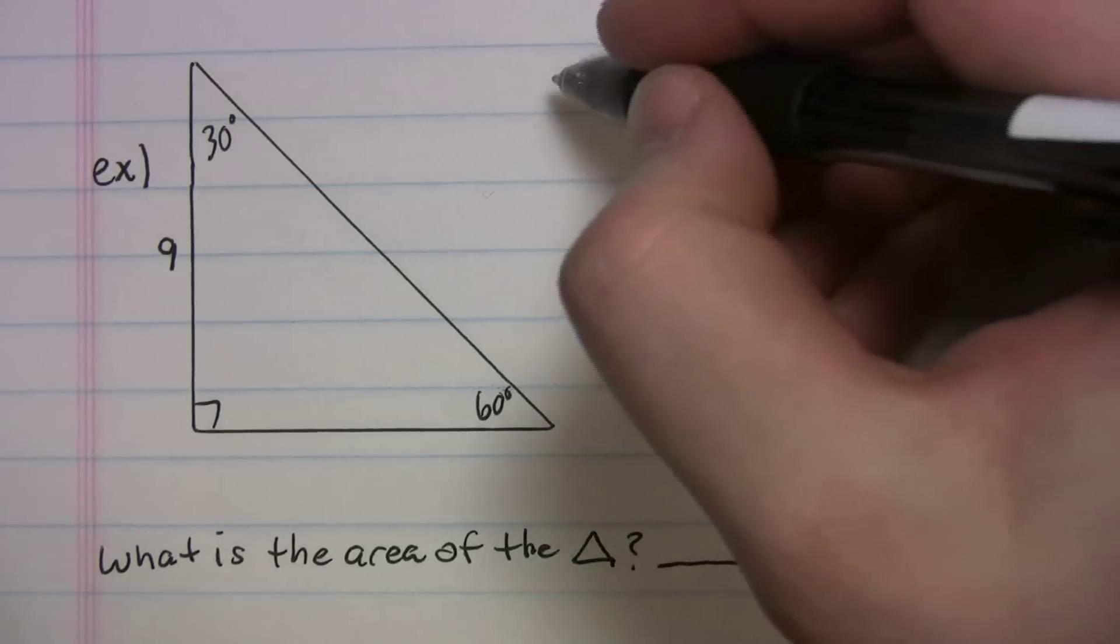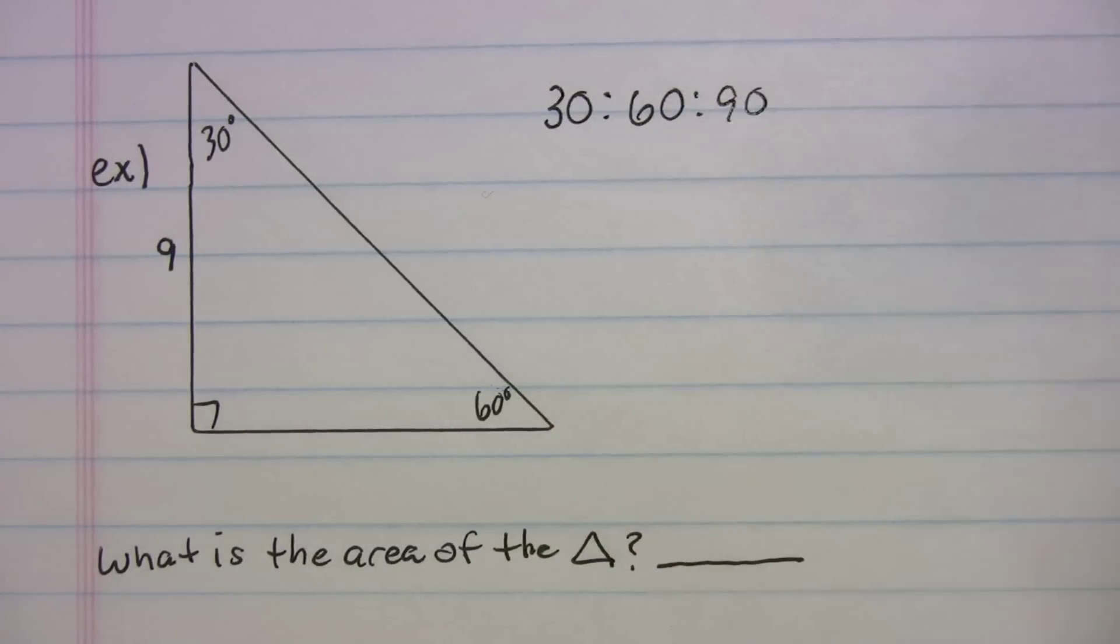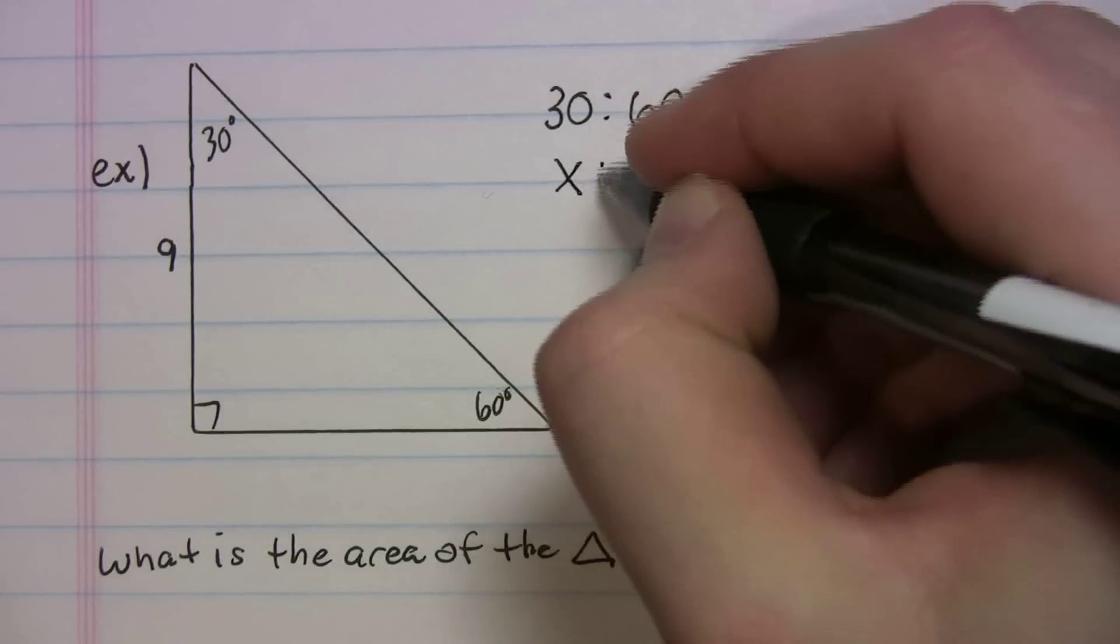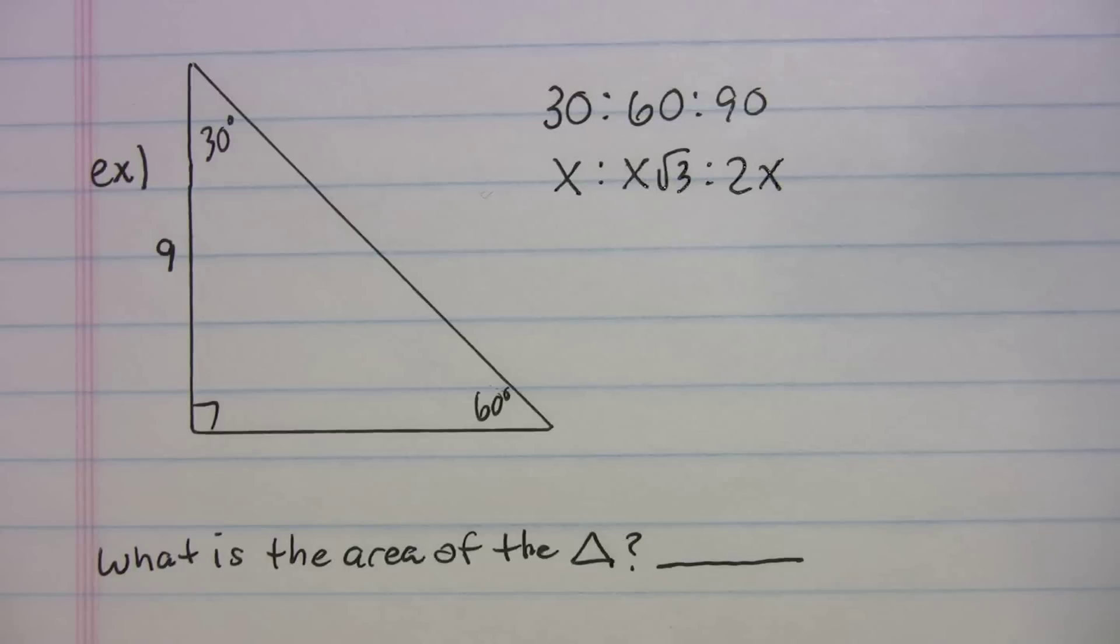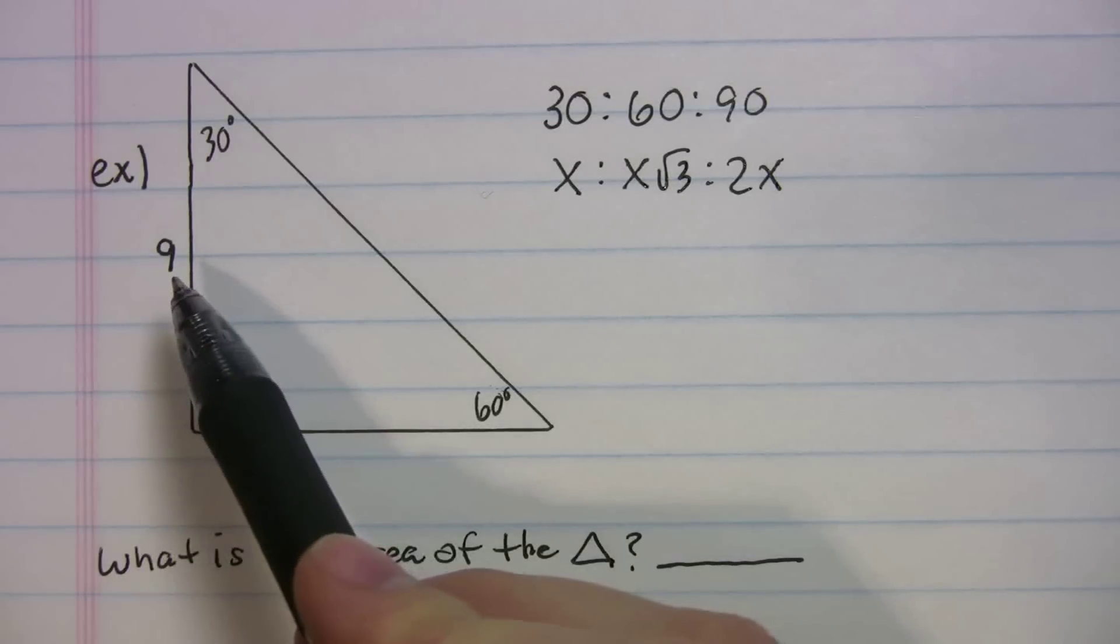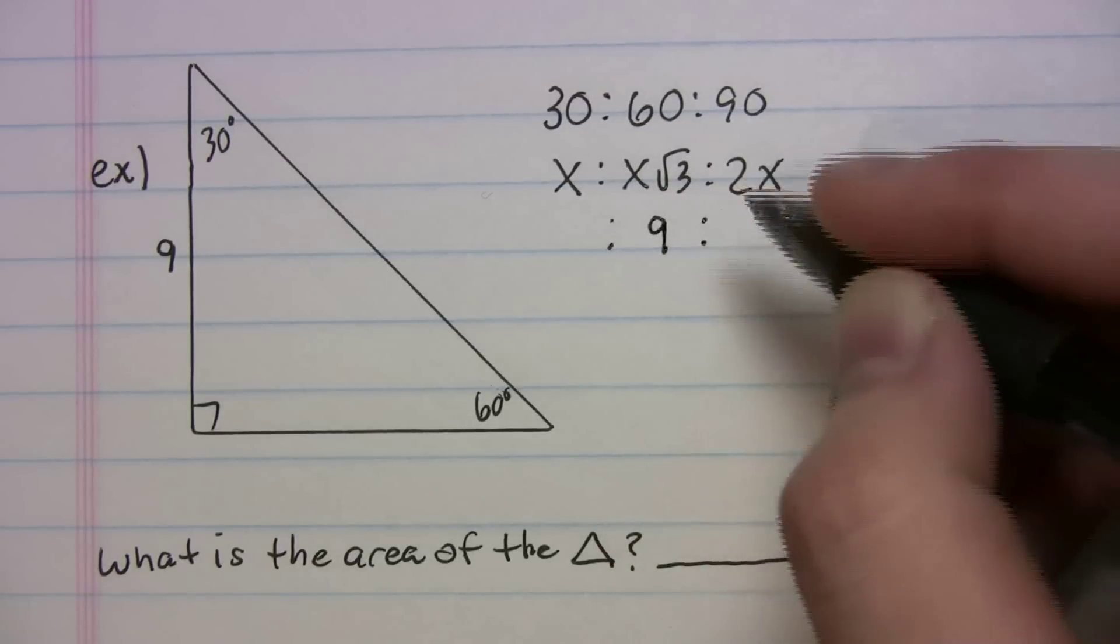So first thing you're going to do, come test day, you know you got a 30-60-90. You're going to write down the ratio of your sides. x, x radical 3, 2x. So from the problem, the 9 is opposite 60. So let's put that in there. I'm going to put it right under the 60.